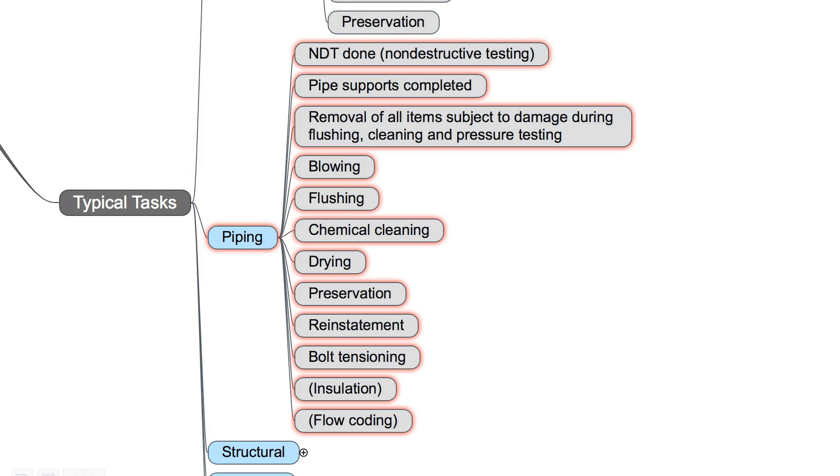Typical tasks for piping are, for example, NDT is done, non-destructive testing, pipe supports completed, all items subject to damage during flushing, cleaning and pressure testing are removed.